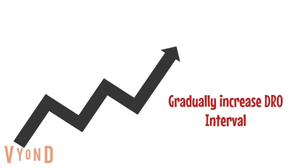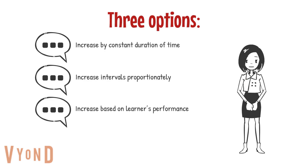There are three ways to gradually increase the DRO interval: first, increase by a constant amount of time — for example, add a minute each session; second, increase intervals proportionately — add 5% of the last interval each session; third, increase based on the learner's performance — for instance, if the learner was at 5 minutes last session, continue from there.